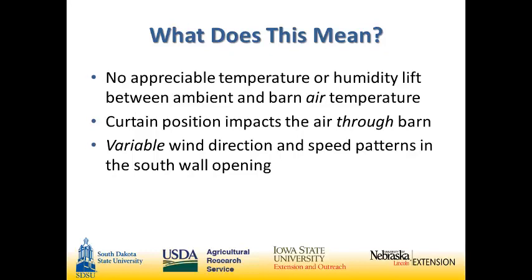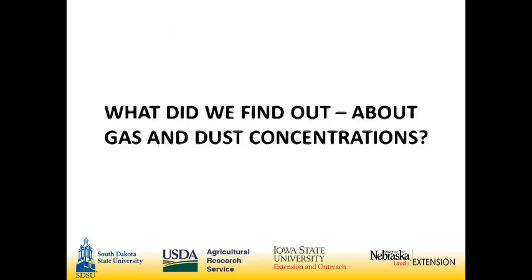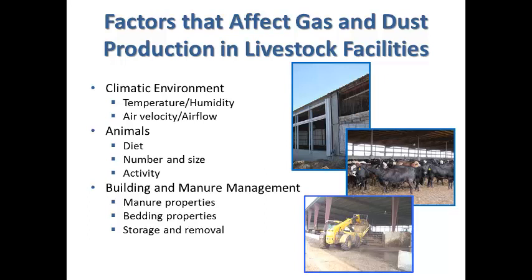Continuing on, we looked at what the gas concentration data tells us — what do we know now about the environment in the barn that affects the cattle themselves and the producers? We come back to those factors that affect gas production and air quality in these facilities, and there are a lot of them. We couldn't control for all of them, especially the diet of these animals, which we know is a big factor. What we looked at in terms of gas concentration values were some environmental effects, animal activity, and manure management style.